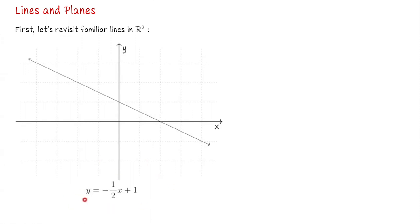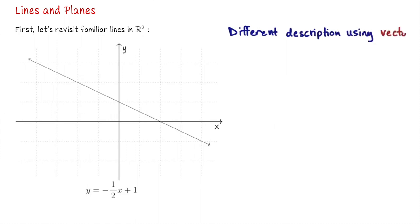Here I have the graph of y equals negative one-half x plus 1 — a line of slope negative one-half with a y-intercept of 1. I'm now going to give you a different description for this line using vectors. To write down a vector equation for this line, the first thing we need is to identify a point we know.